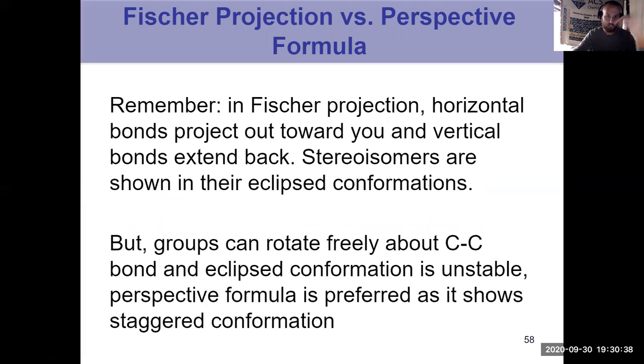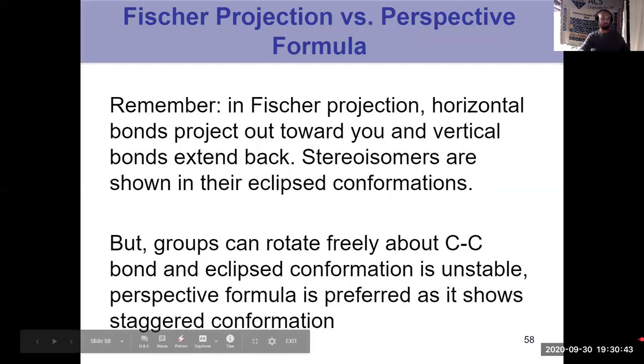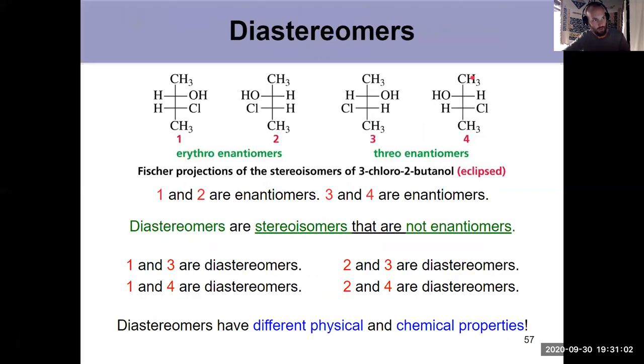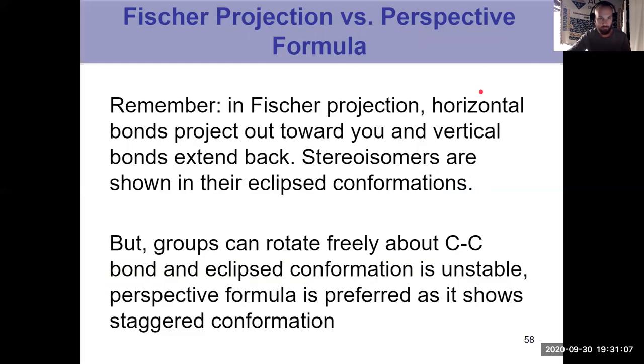So we've already talked about this information with the perspective formulas. Fisher projections, the horizontal bonds are coming out towards you. That's the bow tie that was referred to in the second video. Vertical bonds are going back. When we have stereoisomers, we're typically showing them in their eclipsed conformations. When we have two asymmetric centers because that's the convenient way to show the Fisher projection when they're eclipsed like that, just so we can have them going in a straight line.